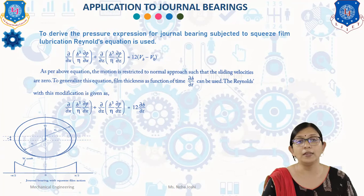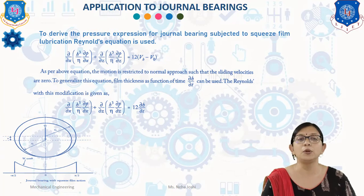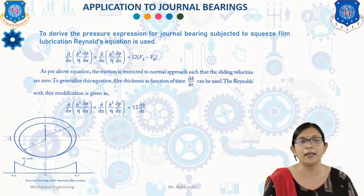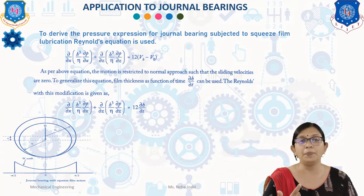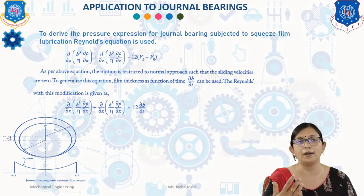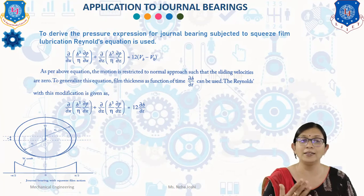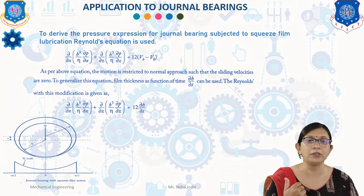To derive the pressure expression for a journal bearing subjected to squeeze film lubrication, the Reynolds equation is used. You can see the journal bearing with squeeze action in the diagram. The Reynolds equation for the journal bearing is: (∂/∂x)(h³/η · ∂p/∂x) + (∂/∂z)(h³/η · ∂p/∂z) = 12·(vh − u). This equation was derived in chapter 3.